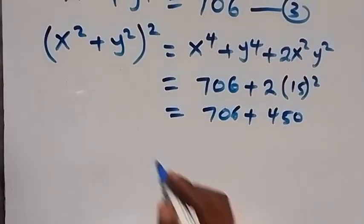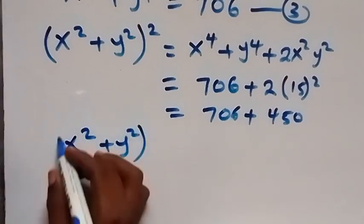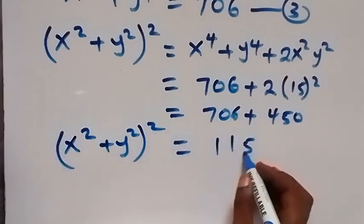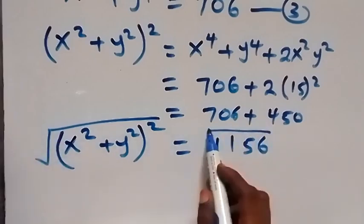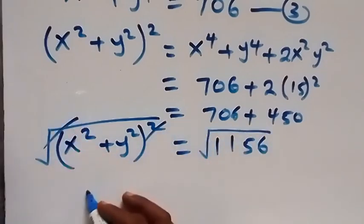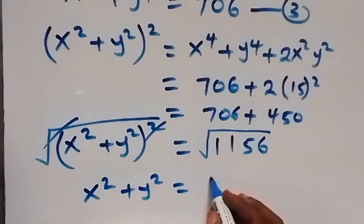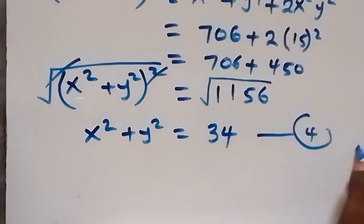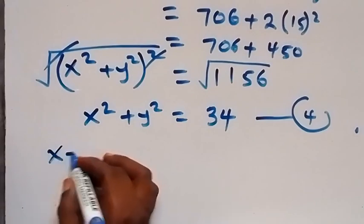So (x² + y²)² equals 1156. Taking the square root on both sides, we get x squared plus y squared equals 34. Let's label this as equation 4.